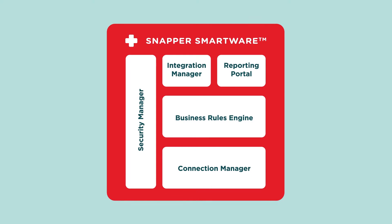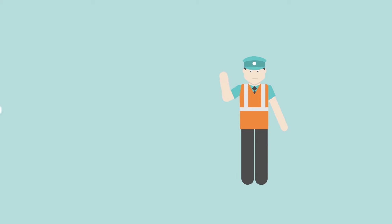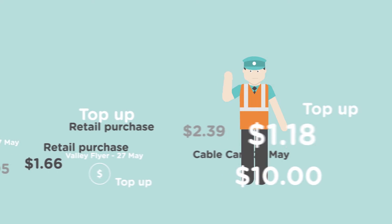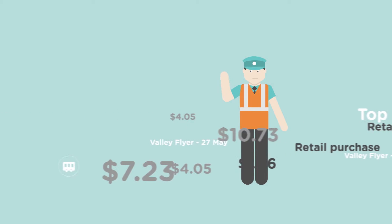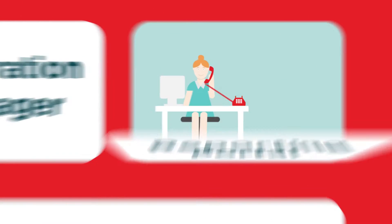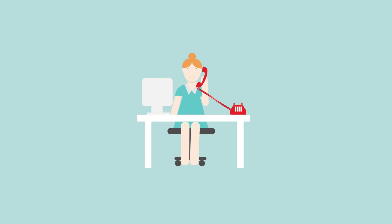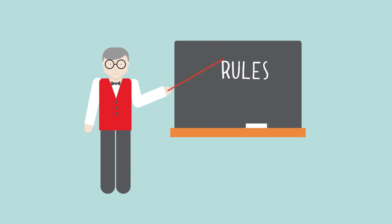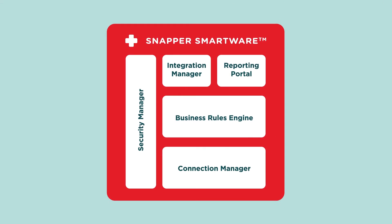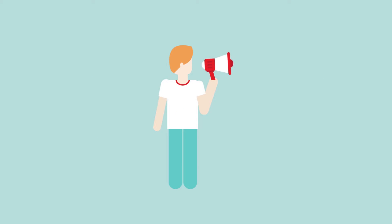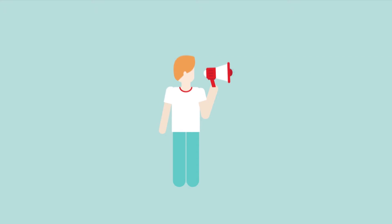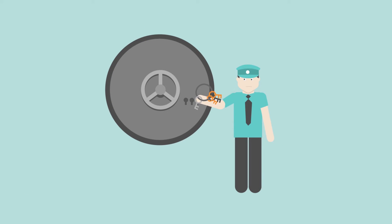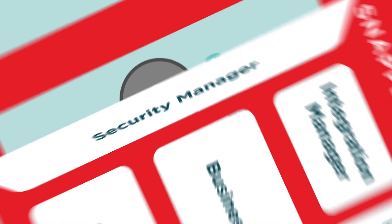It consists of the following modules: Integration Manager – receives and manages data such as transaction history and credit limits. Reporting Portal – provides a platform for both customer care and administration. Business Rules Engine – where rules are applied and actions are taken, like enforcing hotlists. Connection Manager – making sure each transaction request happens. Security Manager – makes all parts of the transaction process secure and keeps the customer's data safe.